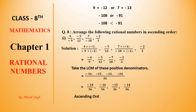After that, we arrange the original numbers in ascending order. The smallest number is minus 2 upon 3, then minus 4 upon 9, then minus 5 upon 12, and the largest is minus 7 upon 18. We have written the original numbers corresponding to the answers we found.